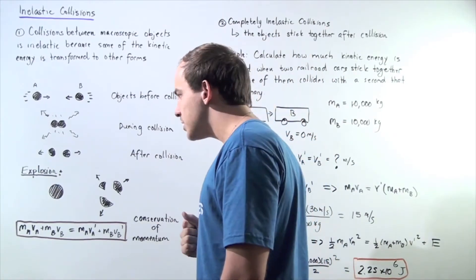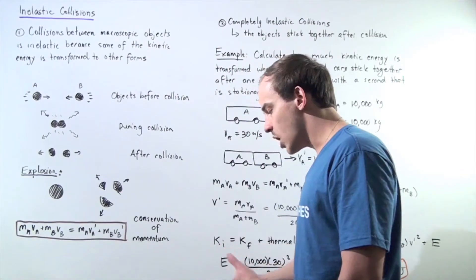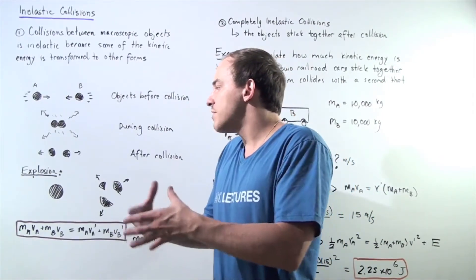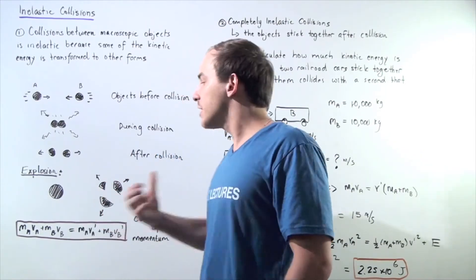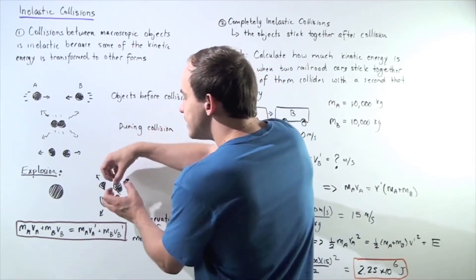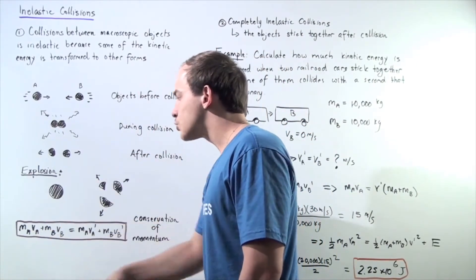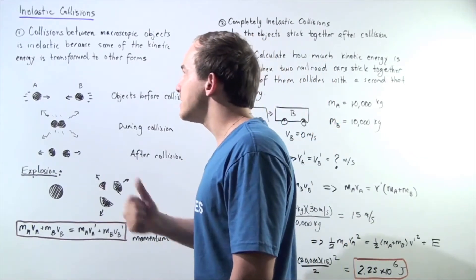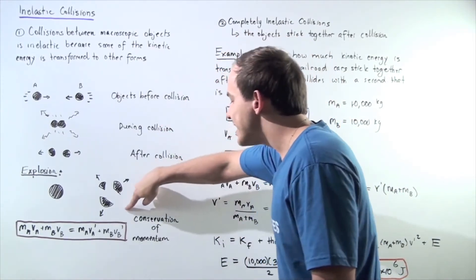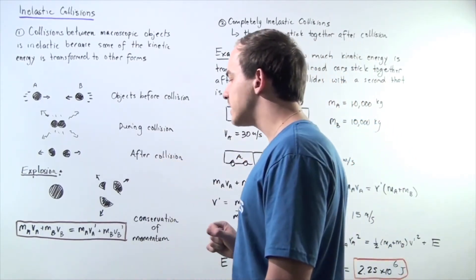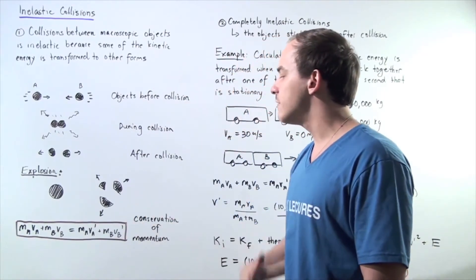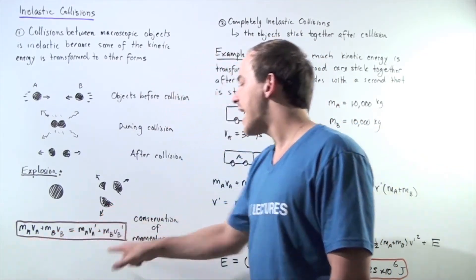A second type of inelastic collision is an explosion. Initially, our object is stationary — it has potential energy — and what happens is some of that potential energy goes into increasing the kinetic energy of that object. The object explodes, it breaks into different parts, and those parts begin to move with kinetic energy. So potential energy is transformed into kinetic energy, and this is another example of an inelastic collision. What is conserved in our inelastic collisions is momentum, so we have the conservation of momentum taking place. The initial sum of the momentum of our two objects is equal to the final sum of the momentum of the objects.